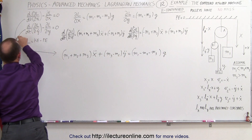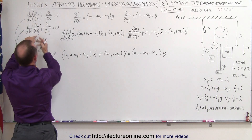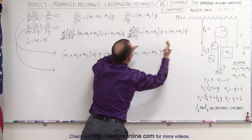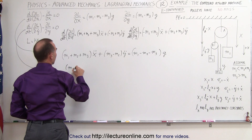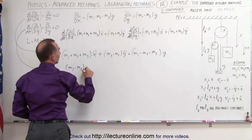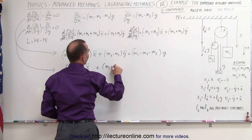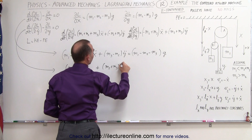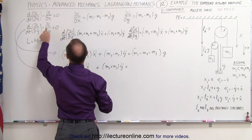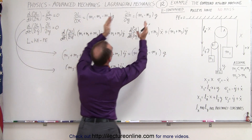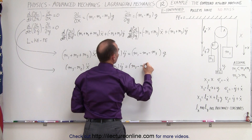For the second equation, we take the time derivative of the Lagrangian with respect to y-dot. We copy that down and reverse the order: m3 minus m2 times x-dot, plus m2 plus m3 times y-dot, is equal to the partial of L with respect to y moved to the other side — this becomes a positive — giving us m2 minus m3 times g.